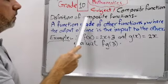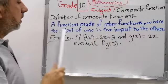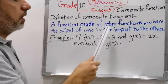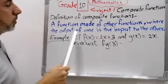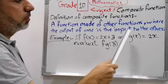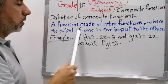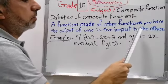Definition of composite function: a function made of other functions where the output of one is the input to the other.